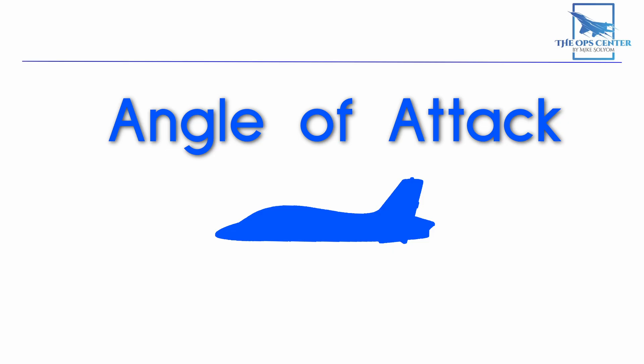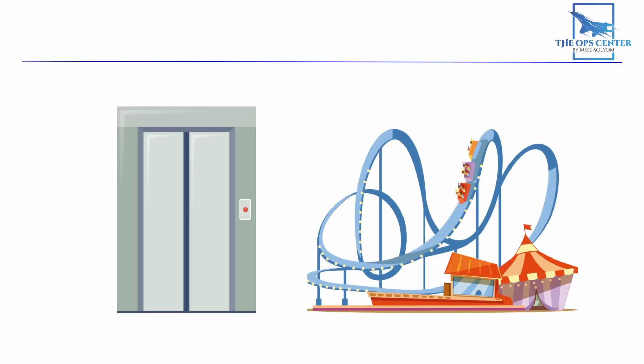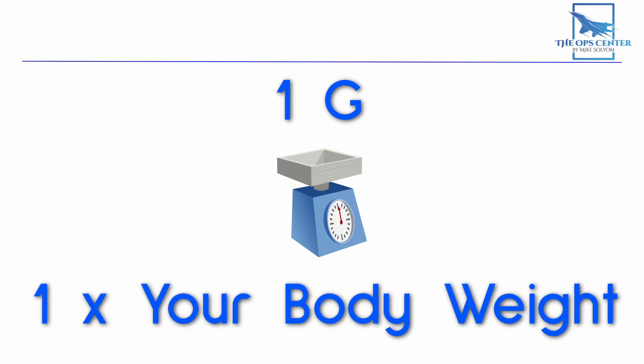Before we jump into aerobatics, there's one final concept called load factor. Any time force is applied to an aircraft to deflect it from straight and level flight, it produces stress on the airframe. That stress is called load factor, and it's measured in G's — with one G being equivalent to what you feel standing on the surface of the earth or in straight and level flight. Just like in an elevator or on a roller coaster, you feel the force of acceleration when moved away from equilibrium. You can visualize it by imagining you're sitting on a scale while flying. In straight and level flight you'd experience one G, reflected on the scale as one times your body weight.